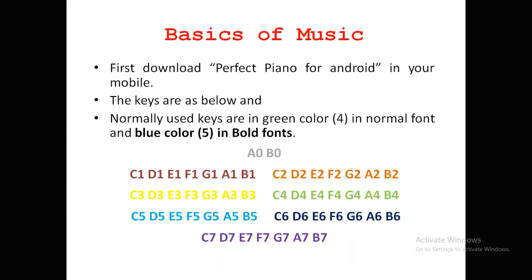First we need to download the Perfect Piano Android application. Once downloaded, the keys are shown like this: normally A0, B0, C1, D1, E1, F1, G1, A1, and B1. This is the order when the keys are aligned, starting from the first keys A0 and B0, then C1, D1, E1, F1, and so on.